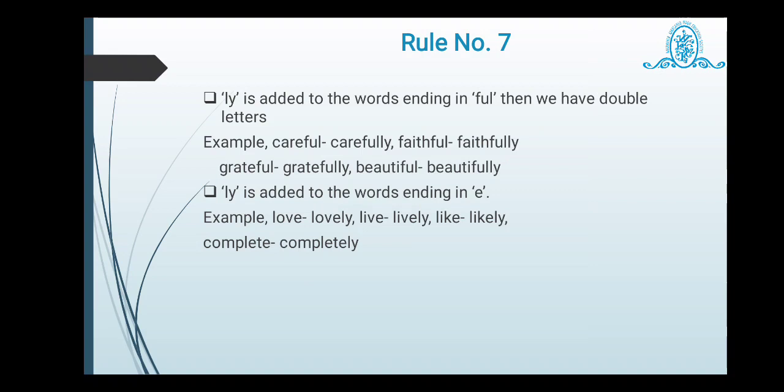Rule number seven. L-Y is added to the words ending in full. Then we have double letters. For example, if any word ends with full and if we have to make an addition of L-Y, then we have to write down double letter. For example, careful, carefully. Faithful, faithfully. Grateful, gratefully. Beautiful, beautifully. Next rule, L-Y is added to the words ending in E. For example, love, lovely. Here we have to preserve E. We are not supposed to drop this E. Love, lovely. Live, lively. Like, likely. Complete, completely. So this is rule number seven.